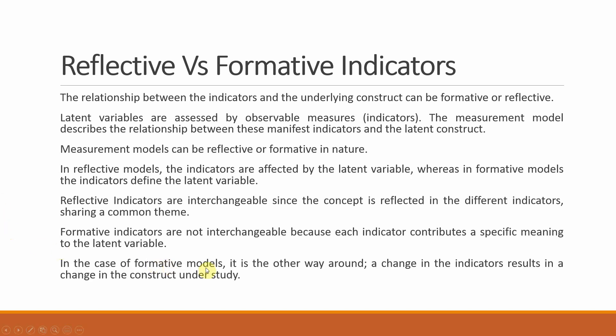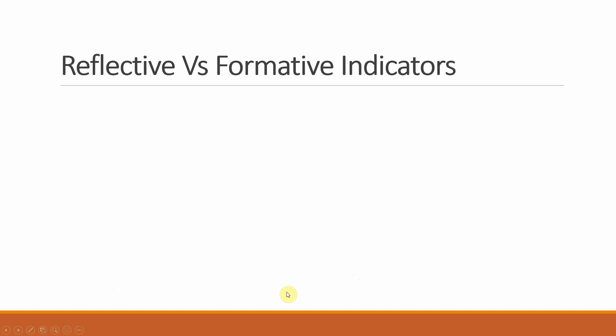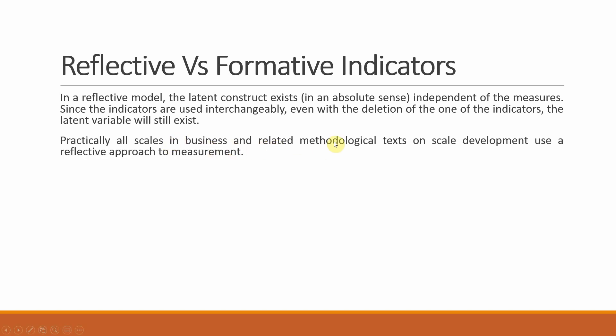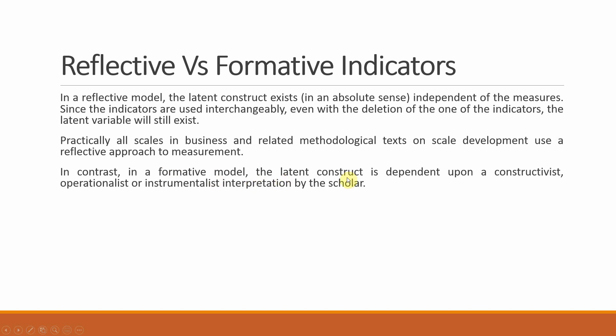In formative models, a change in the indicators results in a change in the construct under study. In a reflective model, the latent construct exists in an absolute sense, independent of the measures — even if you delete one or two items, the construct retains its identity because the items are interchangeable. Practically all scales in business and related methodological texts on scale development use a reflective approach, where even removing a few items still leaves the scale and construct valid for further research.